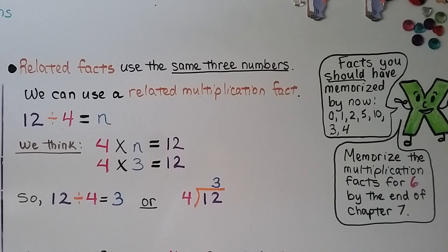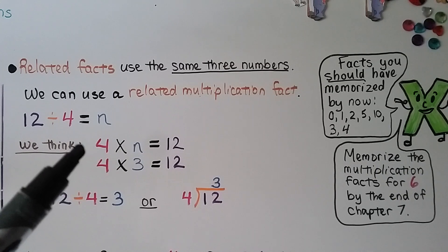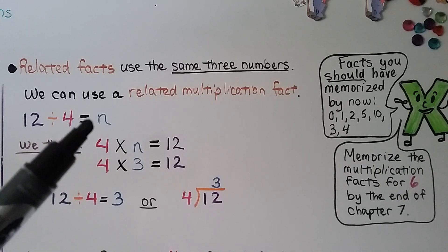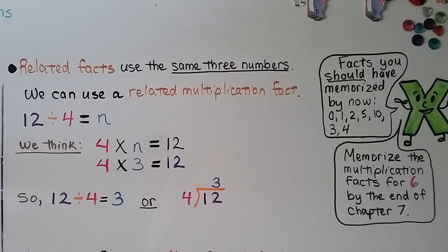Related facts use the same three numbers. We can use a related multiplication fact to do 12 divided by 4. We think 4 times n is equal to 12. And 4 times 3 is equal to 12. So we know n is equal to 3. So 12 divided by 4 is equal to 3.